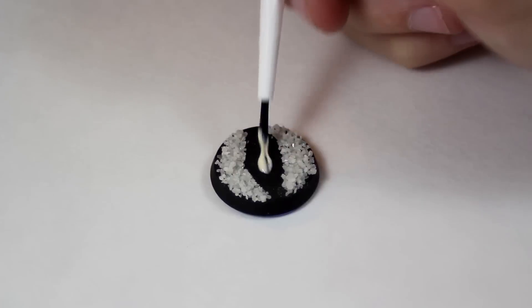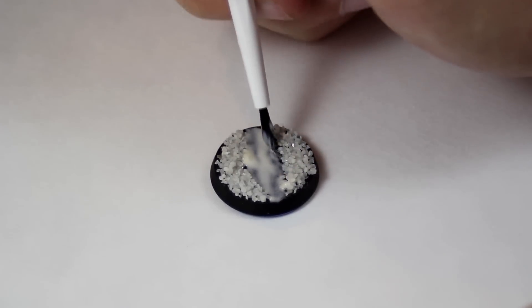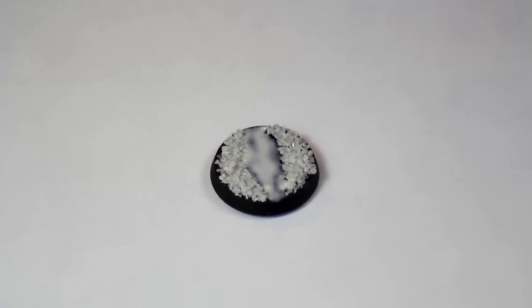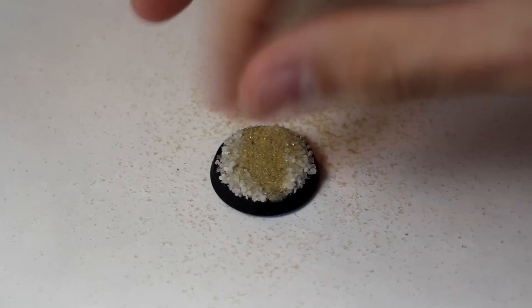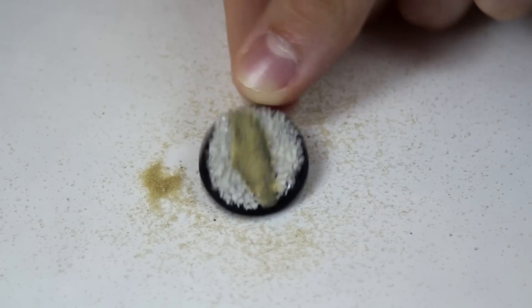After that was dry, I took some more PVA glue and applied it to the middle of the base. Then I took a small pinch of some really fine grain sand and put it in the middle. Now make sure you shake this off right away since you don't want it to be sticking to the base in clumps.